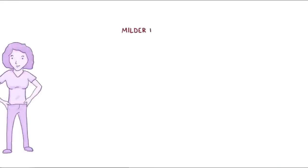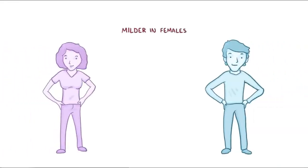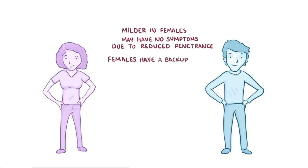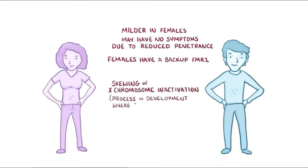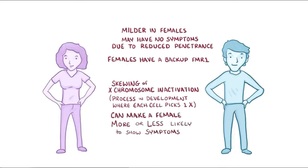Fragile X is typically milder in females than males, and many females with the Fragile X mutation have no symptoms due to reduced penetrance. This is because females have a normal backup copy of FMR1 on their other X chromosome. Skewing of X chromosome inactivation, which is the process in development where each cell picks one X chromosome to rely on, can make a female more or less likely to show symptoms. Interestingly, FMR1 expansions are almost always inherited from the mother.